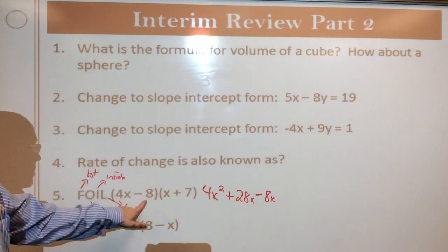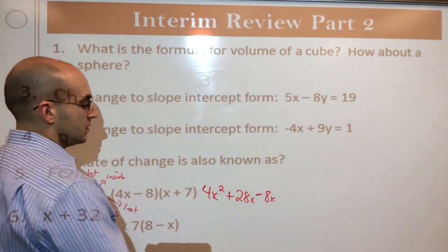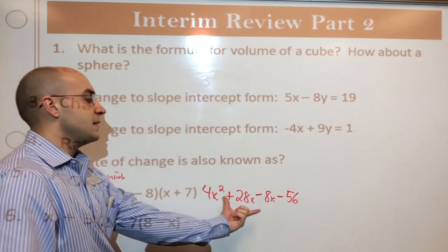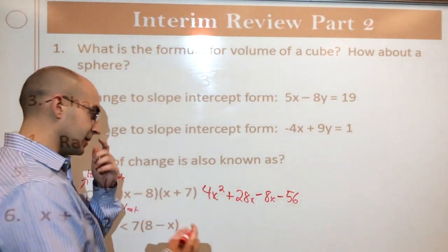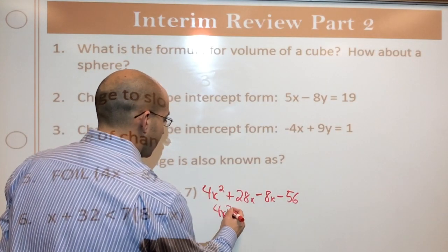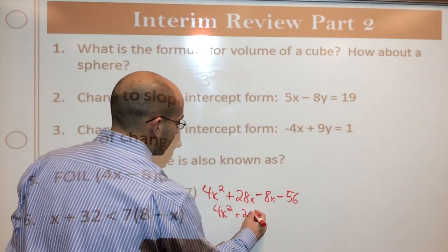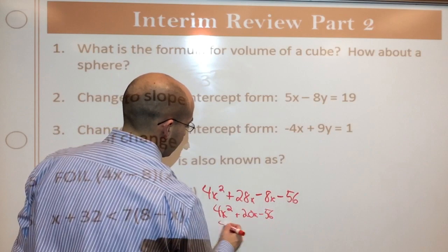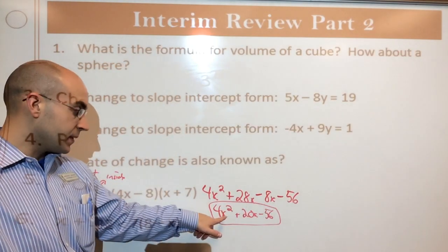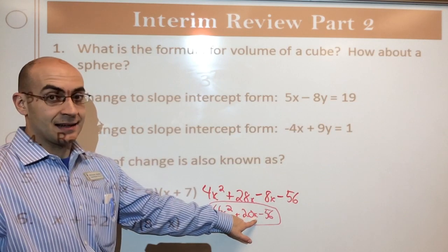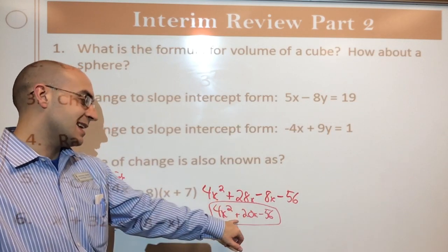And then else that's for last term. So negative 8 times 7. So this is negative 56. Now I want to combine the two middle terms. The two middle terms you'll always be able to combine because you're kind of multiplying the same things together. So this is going to be 4x squared plus 20x minus 56. This is my final answer. And no, I cannot combine the 20x and the 4x squared because that x doesn't look like that x.